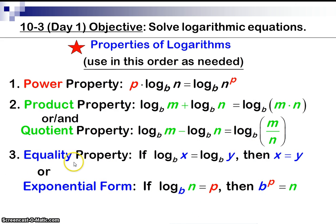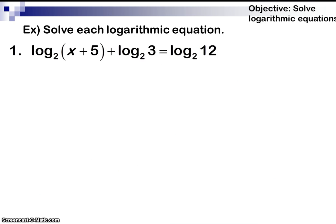The next one is the equality property, and we went over this already. If the logs are the same, we could put the insides equal to one another. And then of course, we could change it to exponential form if we wanted to. So these are the basic properties, and there are two more that I'll go over at the end that are kind of neat to use. So let's take a look at an example.